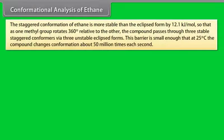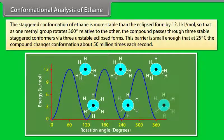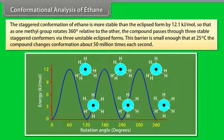The staggered conformation of ethane is more stable than the eclipsed form by 12.1 kJ per mole, so that as one methyl group rotates 360 degrees relative to the other, the compound passes through three stable staggered conformers via three unstable eclipsed forms. This barrier is small enough that at 25 degrees Celsius the compound changes conformation about 50 million times each second.